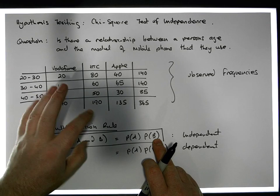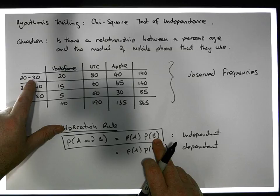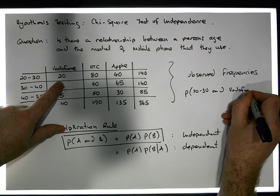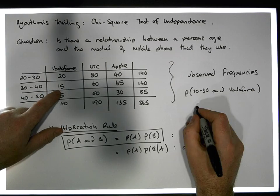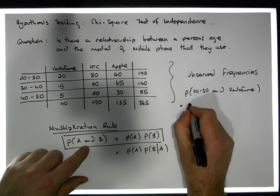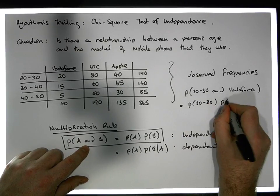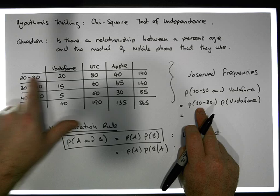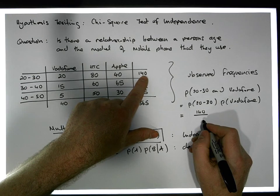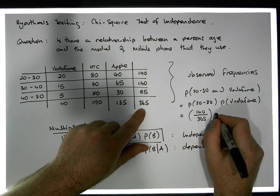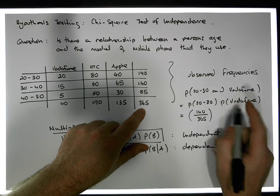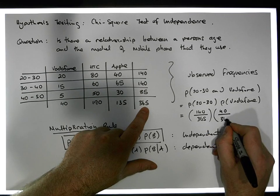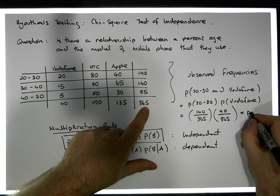This is an important fact, because we're going to assume independence and calculate probabilities under that assumption. For example, the probability of randomly selecting somebody who is 20 to 30 years of age and uses Vodafone, if independent, would be P(20–30) × P(Vodafone). That equals 140/365 times 40/365, giving us a proportion or probability.